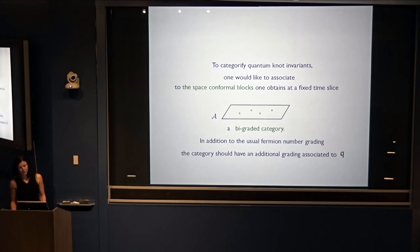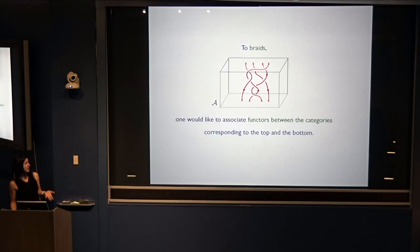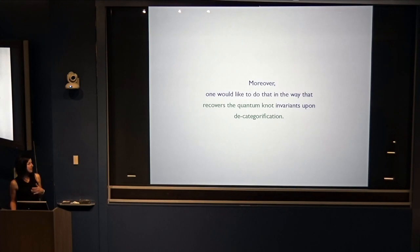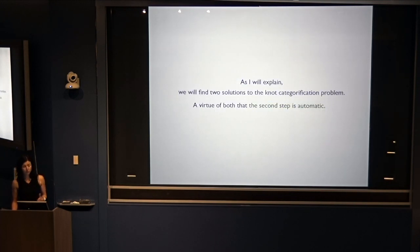To categorify quantum knot invariants, one would like to associate to the space of conformal blocks at a fixed time slice a bigraded category, which in addition to the usual fermion number grading has an additional grading associated to Q. To braids, you'd like to associate functors between categories corresponding to the top and the bottom. To links, you'd like to associate a vector space whose elements are morphisms between objects of the categories at the top and bottom up to the action of the braiding functor. Moreover, you'd like to do all that in a way that recovers the quantum knot invariants upon decategorification. We'll find two solutions to the knot categorification problem, a virtue of both of which will be that the decategorification step is automatic.